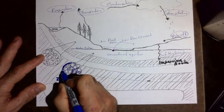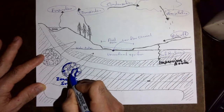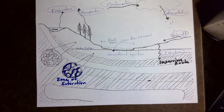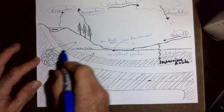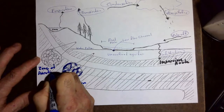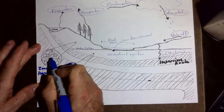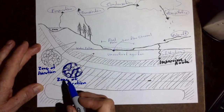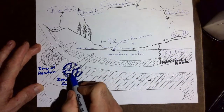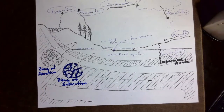We call this the zone of saturation. This entire area is the zone of saturation — where the spaces between all the little pebbles are completely filled with water. In the area above, there's just air between the rock pieces — we call that the zone of aeration. The zone of aeration is rock with air between the pieces; the zone of saturation is rock with water between the pieces. An aquifer is not an underground cavern filled with water — it's sand or gravel with water filling the spaces.